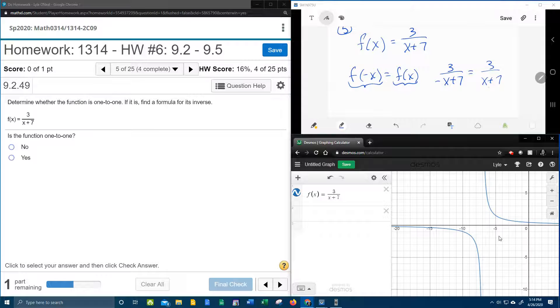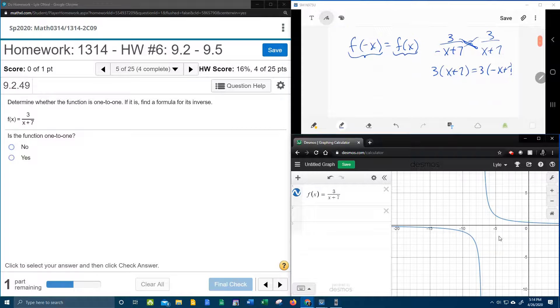We can do a little cross multiply. That's going to be 3 times x plus 7, going this way, equals 3 times negative x plus 7. And then simplifying that, we get 3x plus 21, and that's going to be negative 3x plus 21.